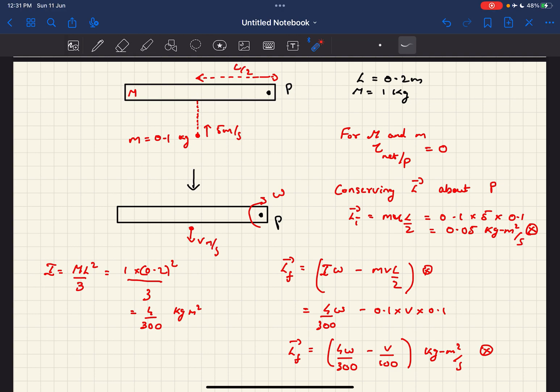Now if we consider the system of small m and capital M, we can say the net torque about the point P of the system is zero, and henceforth we can conserve the angular momentum of the system about point P.